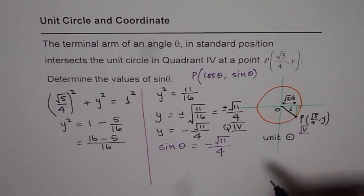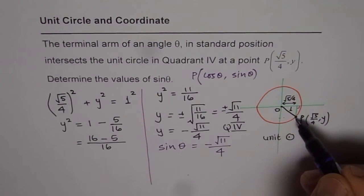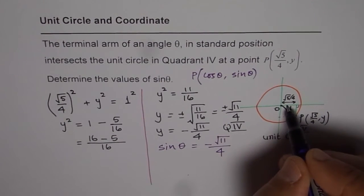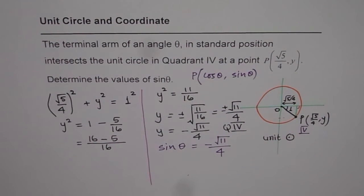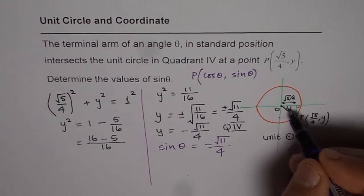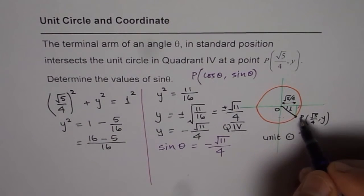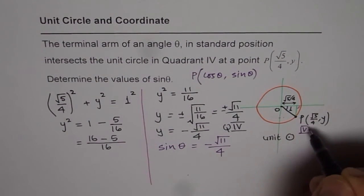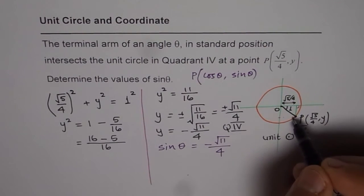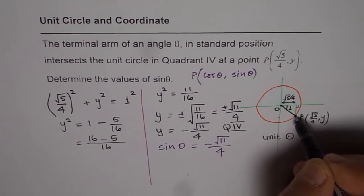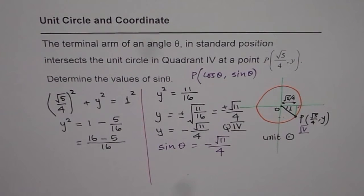Even otherwise you can use the right triangle. Now you know what this triangle will give. So this is your angle theta and y value is minus square root 11 over 4 divided by hypotenuse which is 1. So you get the same answer.